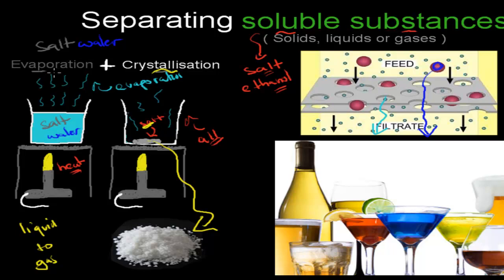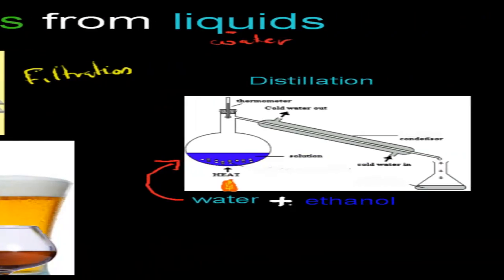So if we have both evaporation, which is just evaporating the water, and crystallization, which is when the crystals form after all the water is gone, we have separated water from salt — because salt is left behind and water has changed into water vapor form. That's one good way of separating soluble substances, such as salt, from water: evaporation plus crystallization, using heat to do this.